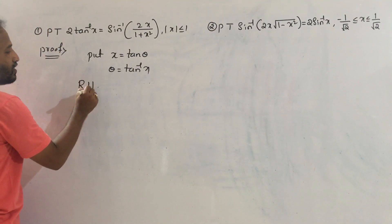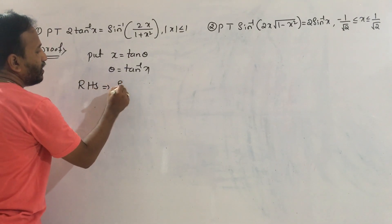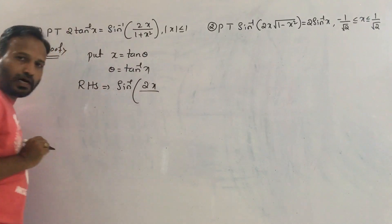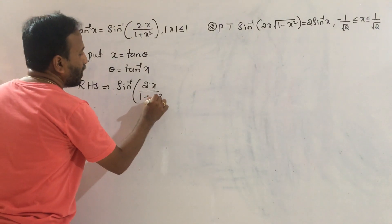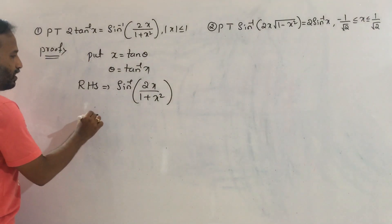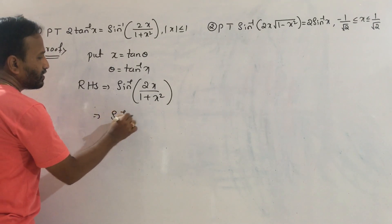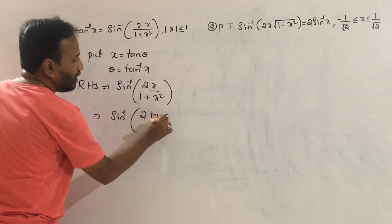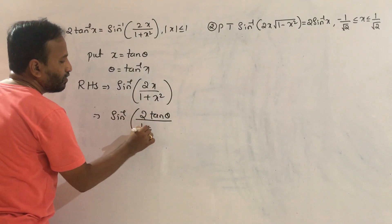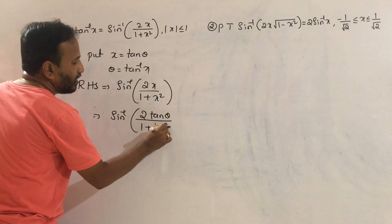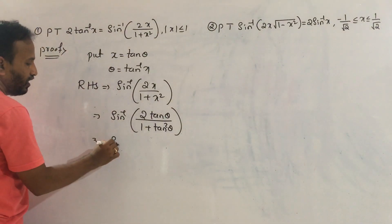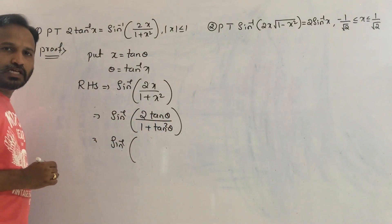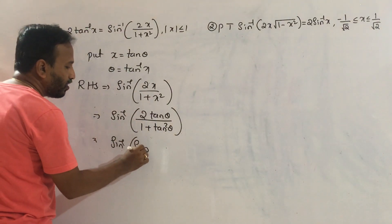So RHS equals sin inverse of 2x divided by 1 plus x squared. Substituting x, we get sin inverse of 2 tan theta divided by 1 plus tan squared theta, which means sin inverse of sin 2 theta.